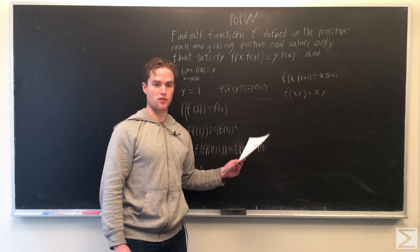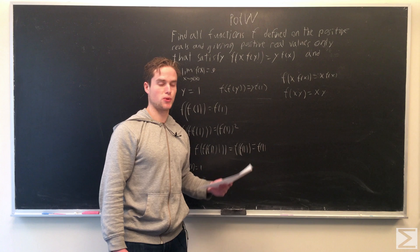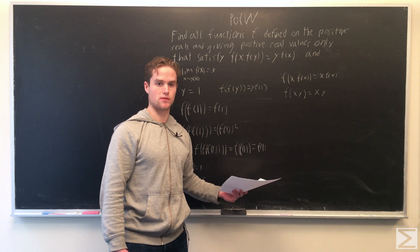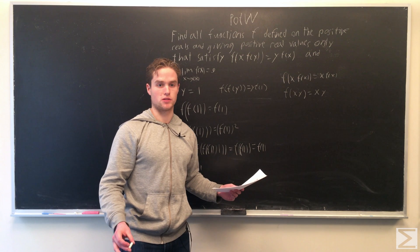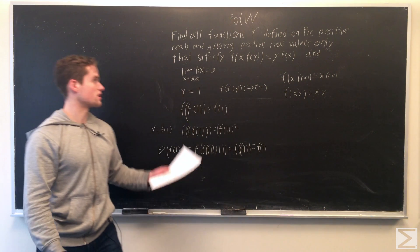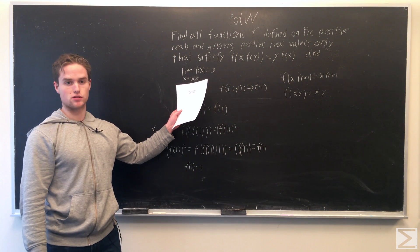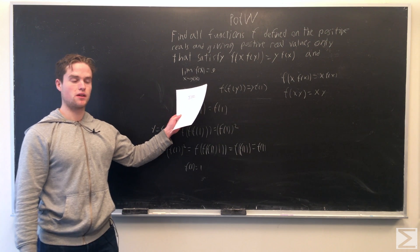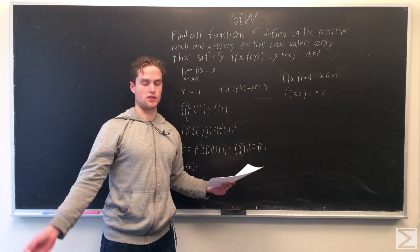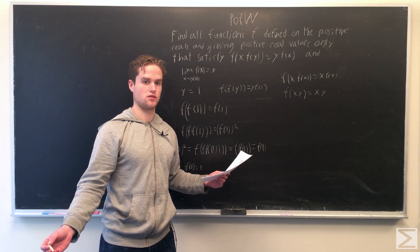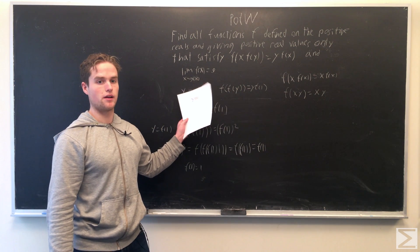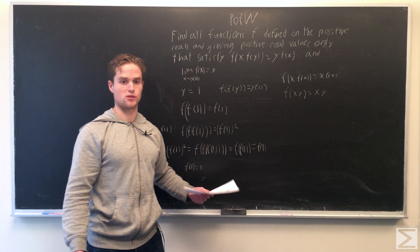So if we have a fixed point greater than 1, call it x, that means x² is a fixed point, x³ is a fixed point, x^n is a fixed point. And so we have fixed points as large as we want. But this contradicts that as x goes to infinity, f(x) must go to 0, because for each fixed point we have points getting arbitrarily large. So we can't have fixed points greater than 1.